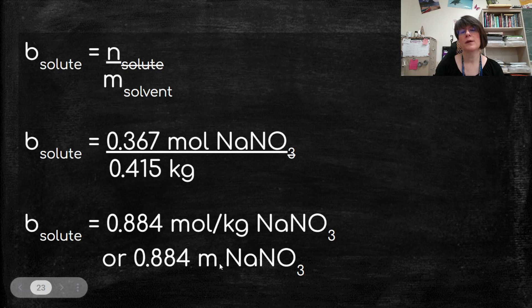So I do the division and I get 0.884 moles per kilogram of sodium nitrate. Commonly we abbreviate that to a lowercase m. You have to be careful. It must be a lowercase m because molality is a lowercase m. Don't confuse it with mass when we're talking about solutions. And we can't put it as a capital M because molarity will be a capital M when I teach you how to do that in the next video.